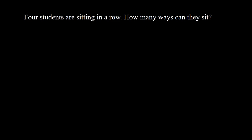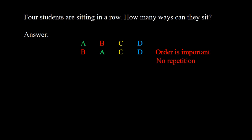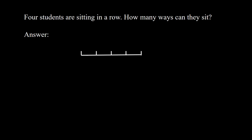Example 3: Four students are sitting in a row — how many ways can they sit? Two different seatings are not the same, so order is important. No one can sit in two places at the same time, so there is no repetition. This is a permutation problem. The first place has 4 possibilities, the second has 3, the third has 2, and the last has 1. That is 4 factorial, the same as P(4,4), giving 24 ways.